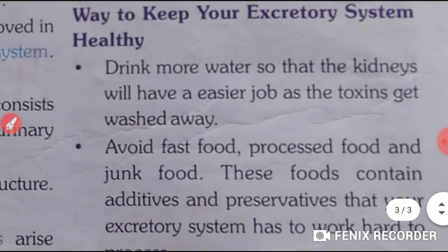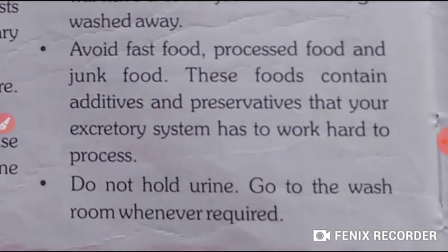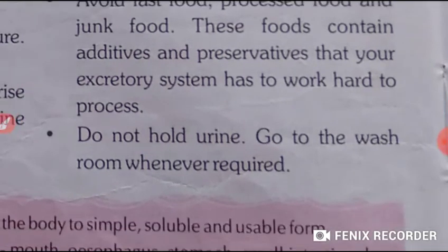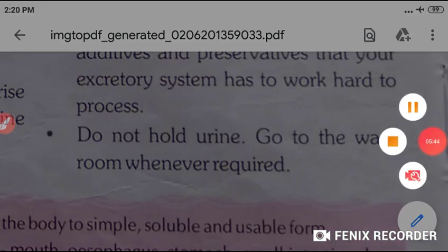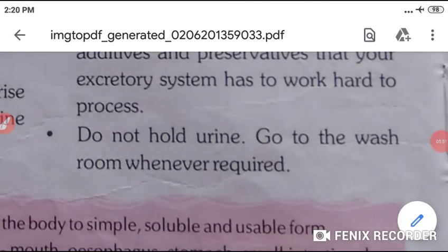To keep your excretory system healthy: drink more and more water so that kidneys have an easier job as toxins get washed away. Avoid fast food and junk foods because they contain additives and preservatives that are harmful for your body and make your excretory system work harder. You should never hold your urine — go to the washroom whenever required. Read your chapter thoroughly and wash your hands with soap and clean water.